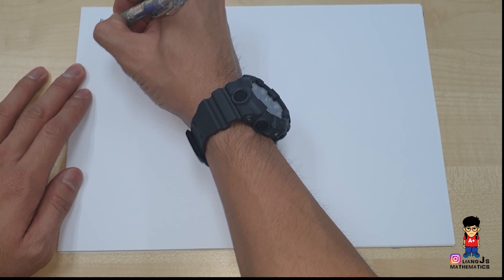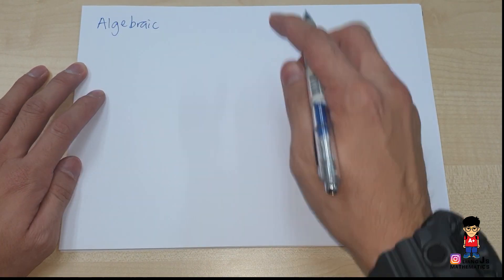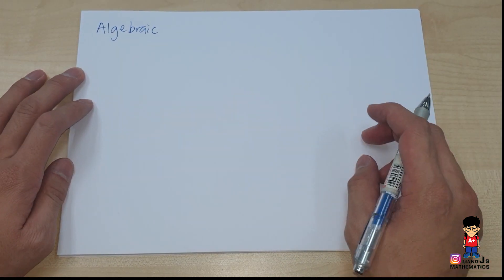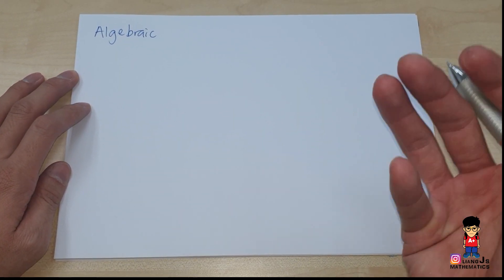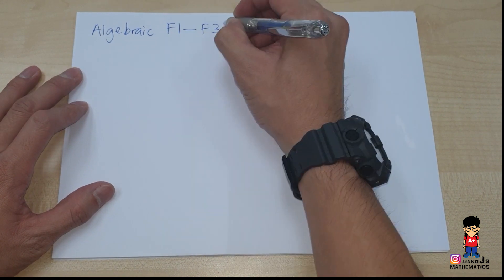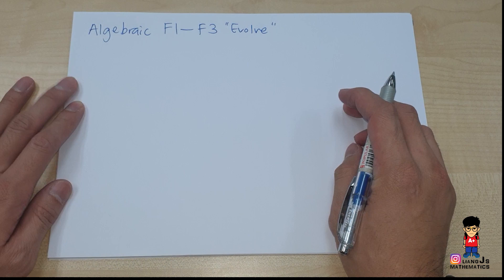Hi everybody, I'm Liangji Mathematics. I'm going to talk about mathematics from Form 1 to Form 3, on this particular topic called algebraic. I'm doing a generalized overview of topics from Form 1 to Form 3 when it comes to unknown-related stuff — what are the things we need to know, and how algebraic concepts evolve.